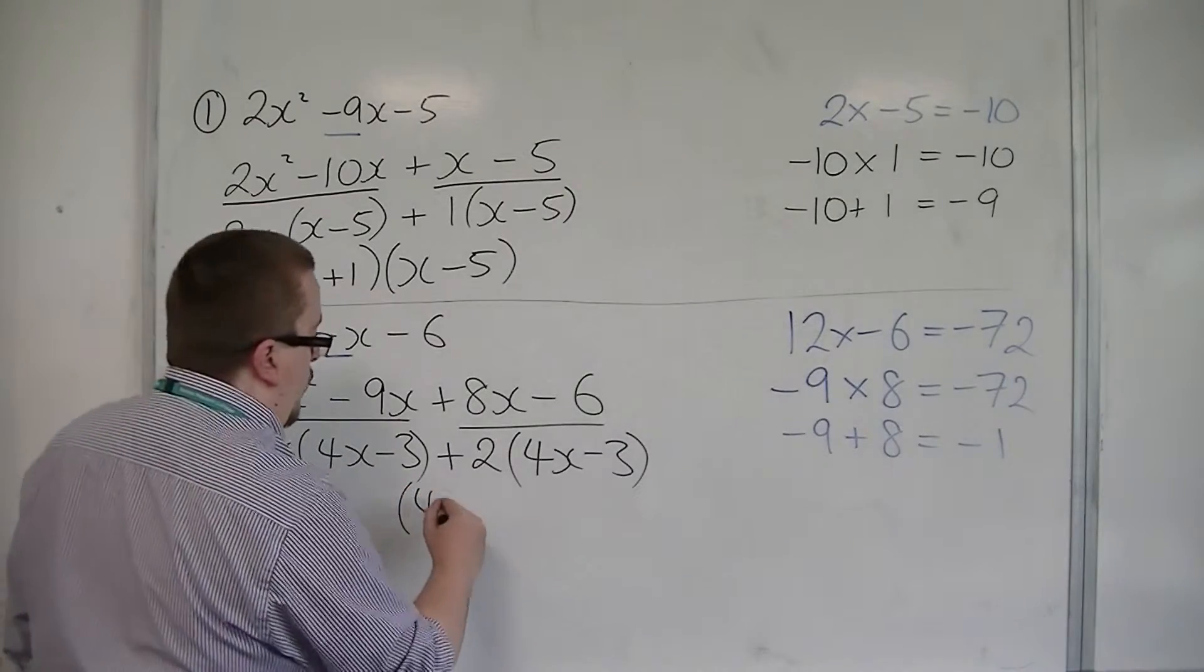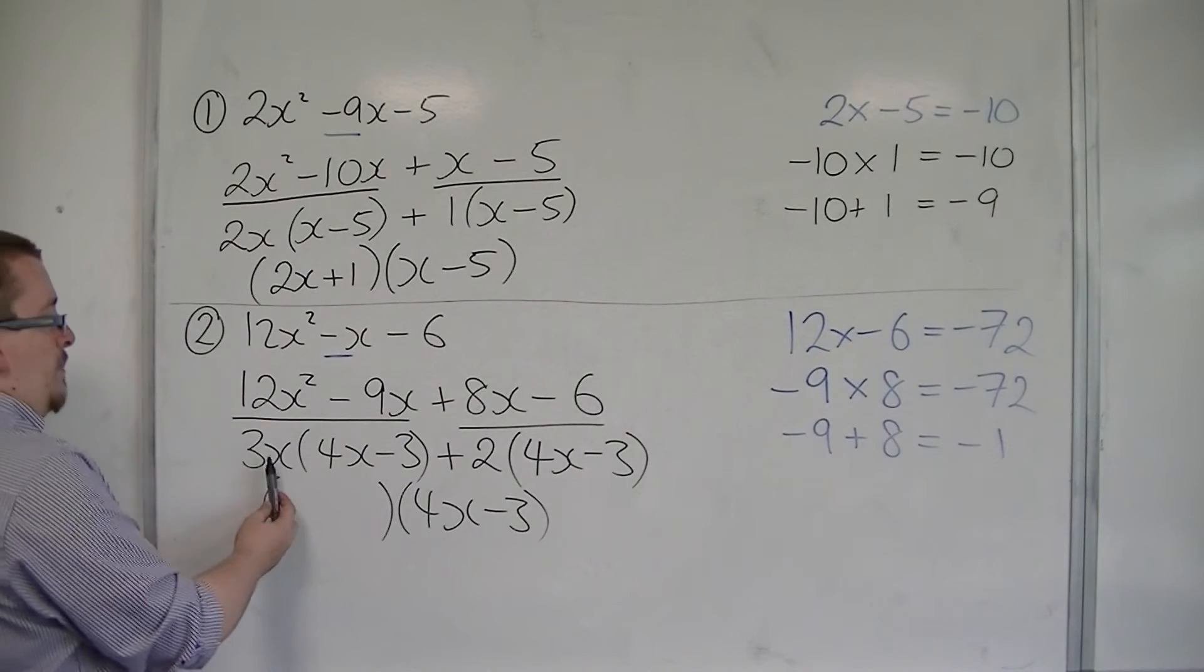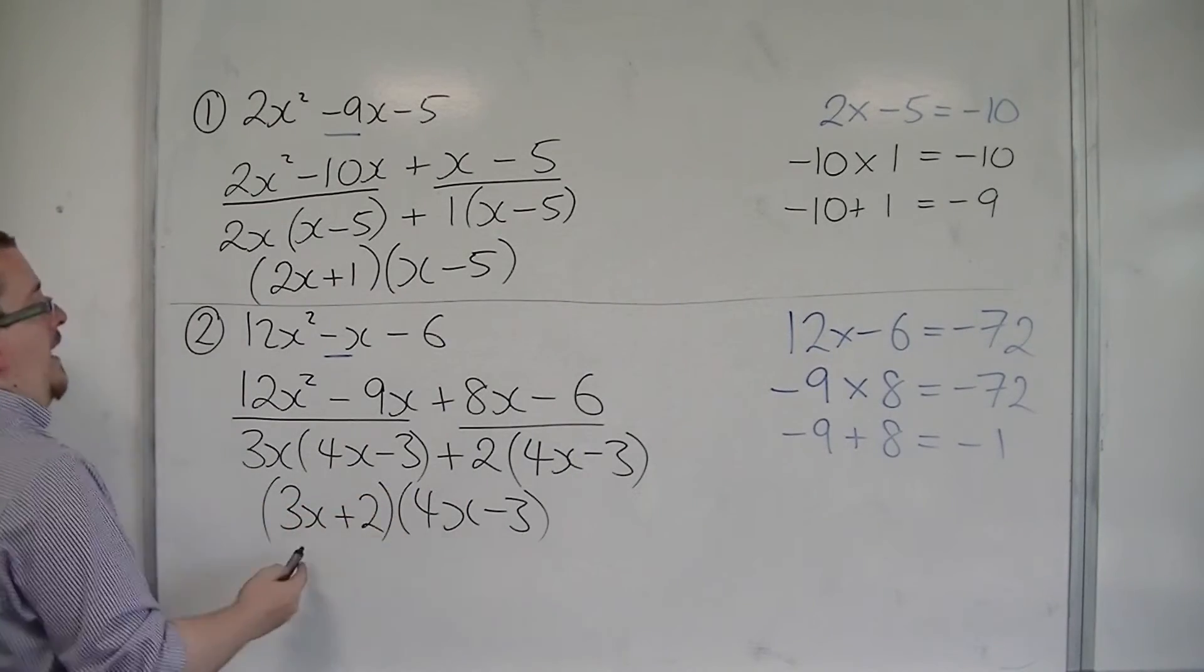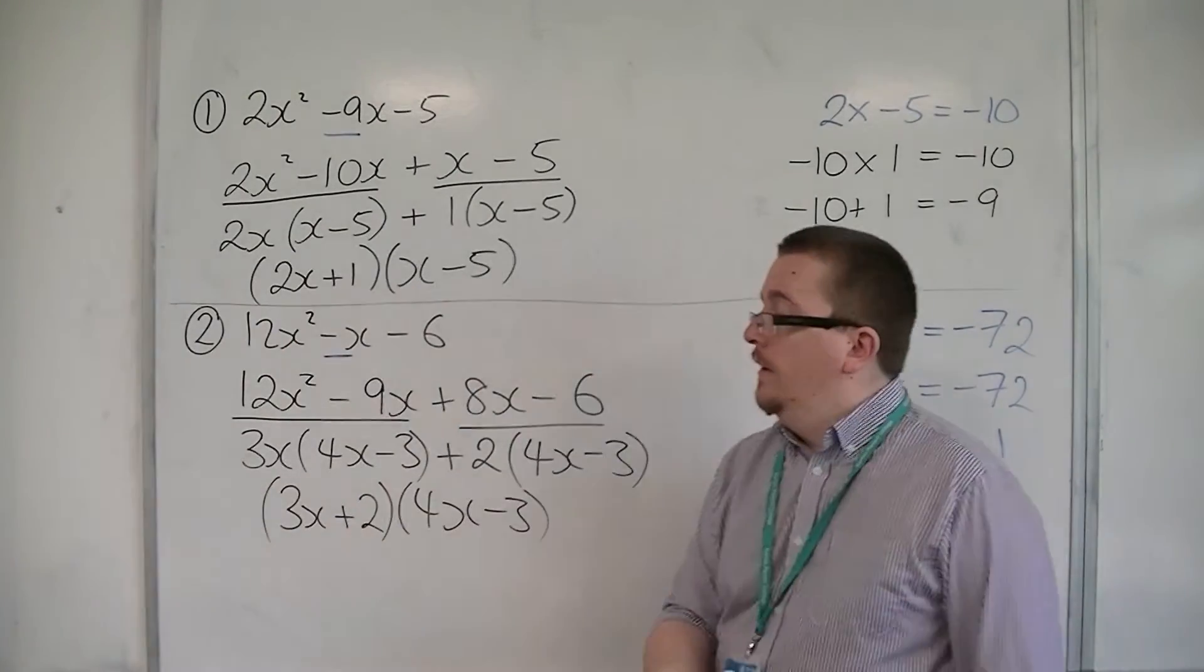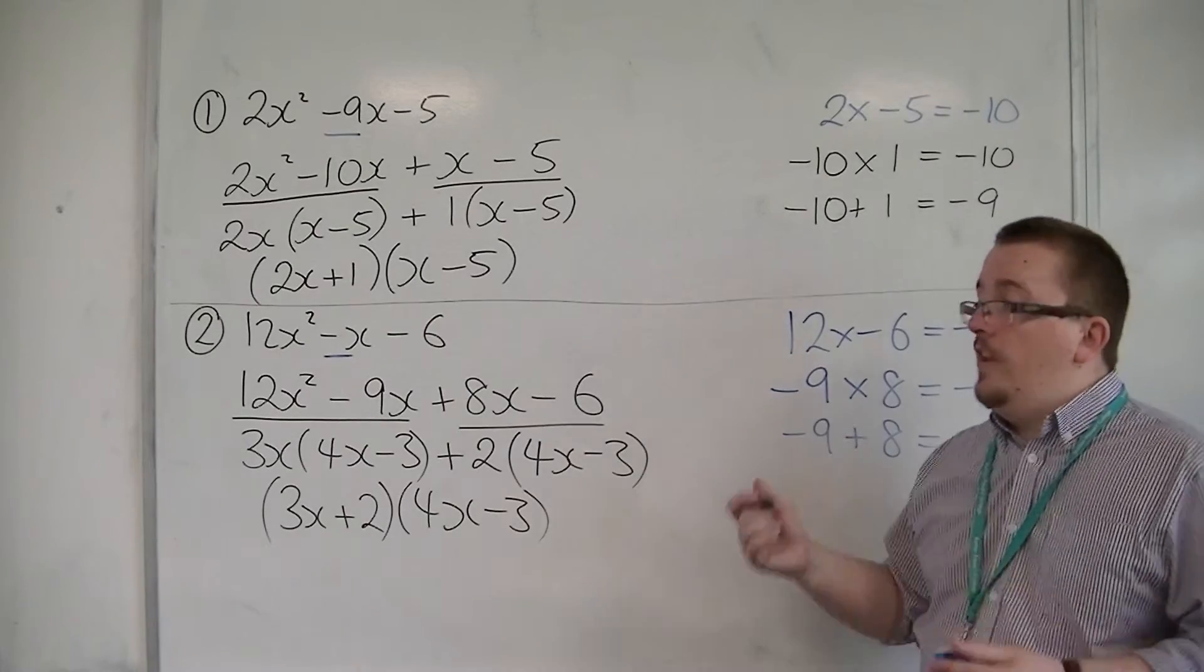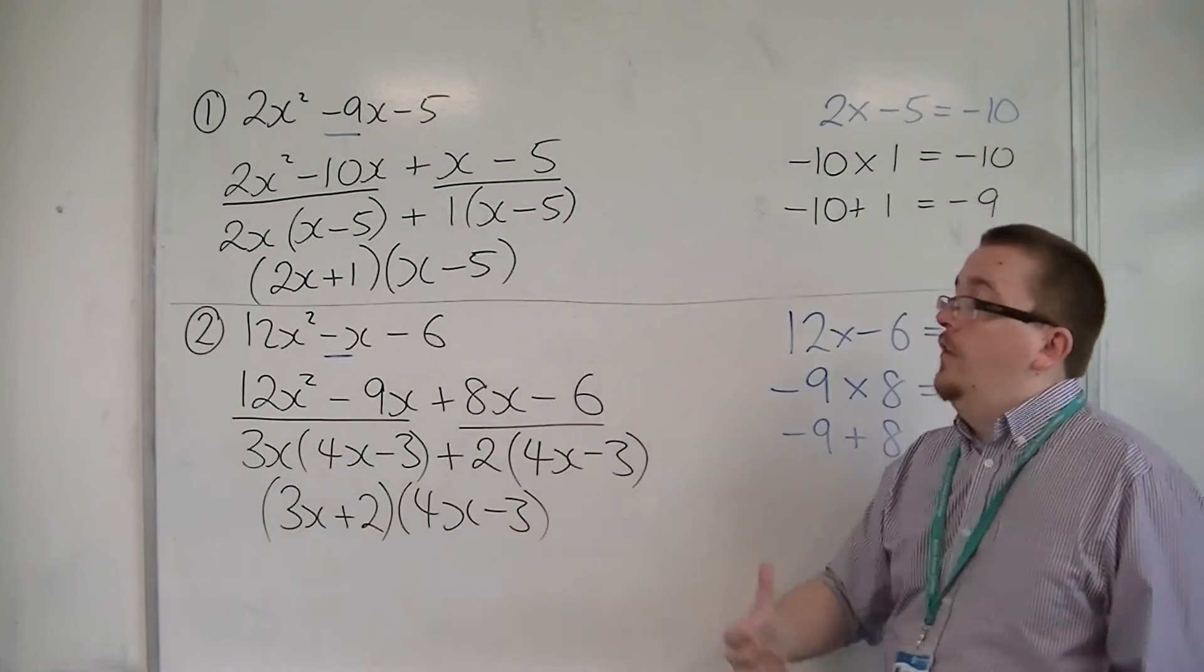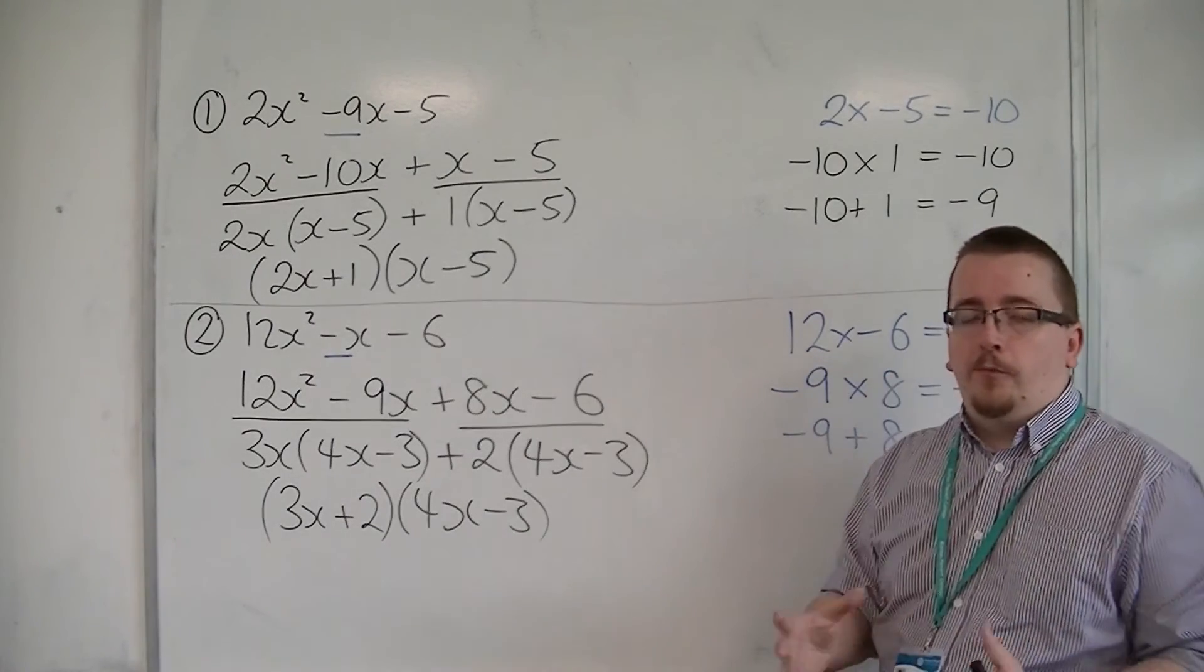So 4x minus 3 is one of the brackets. And the second bracket is made up of the 3x and the 2. And that is the factorised form of that quadratic. And that's how we can use this method to factorise quadratics that might take us a long time to do it by inspection.